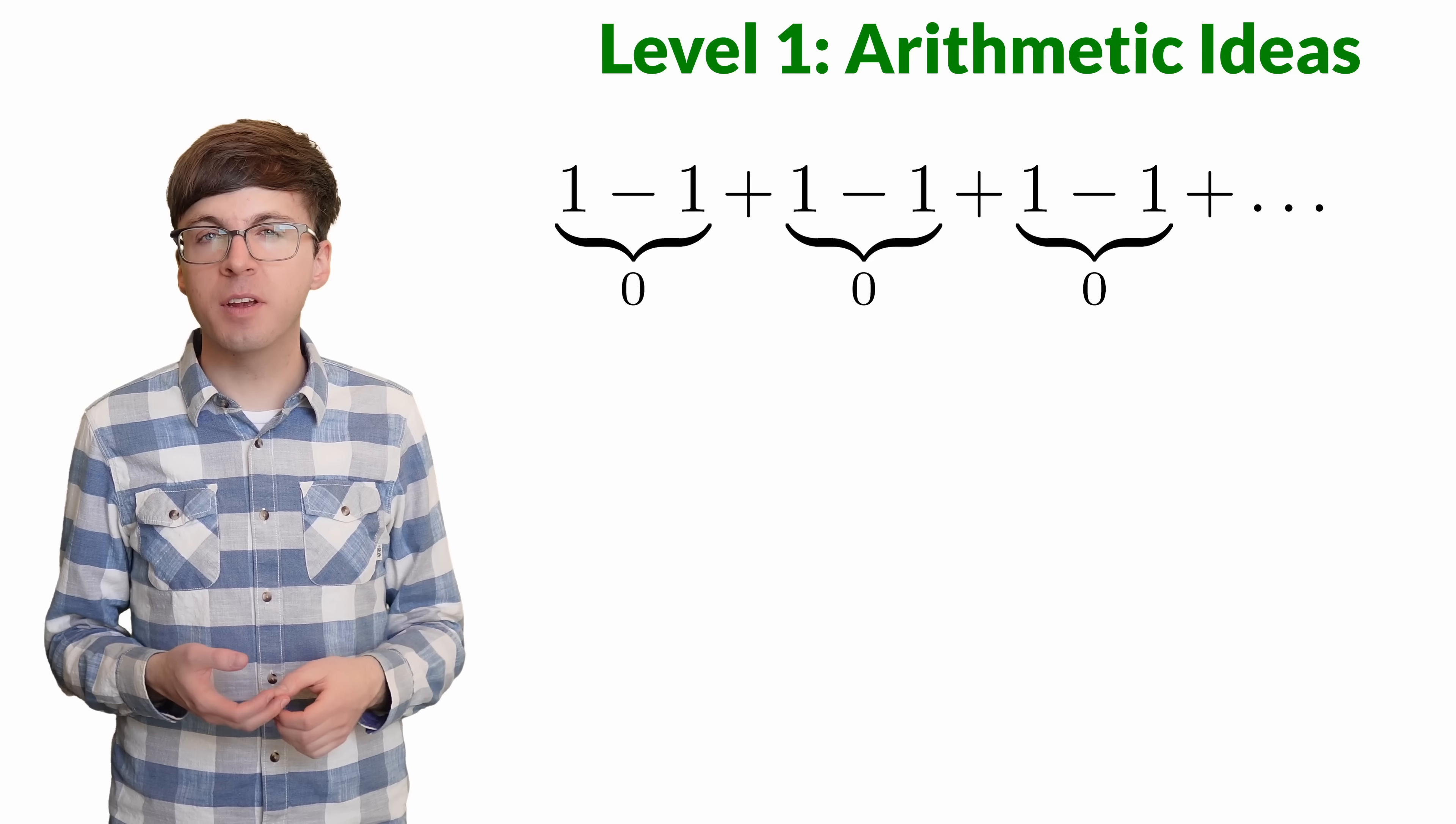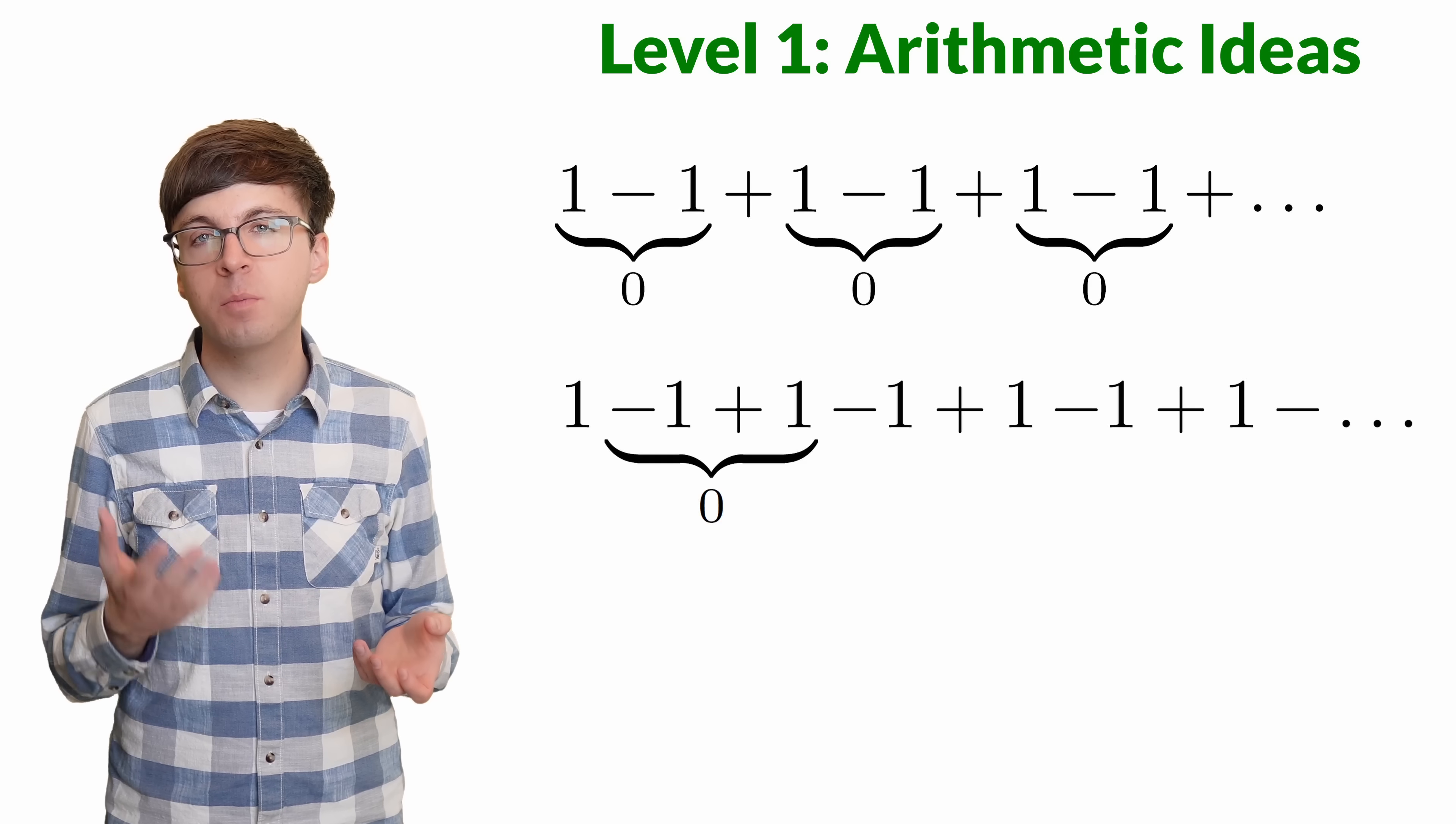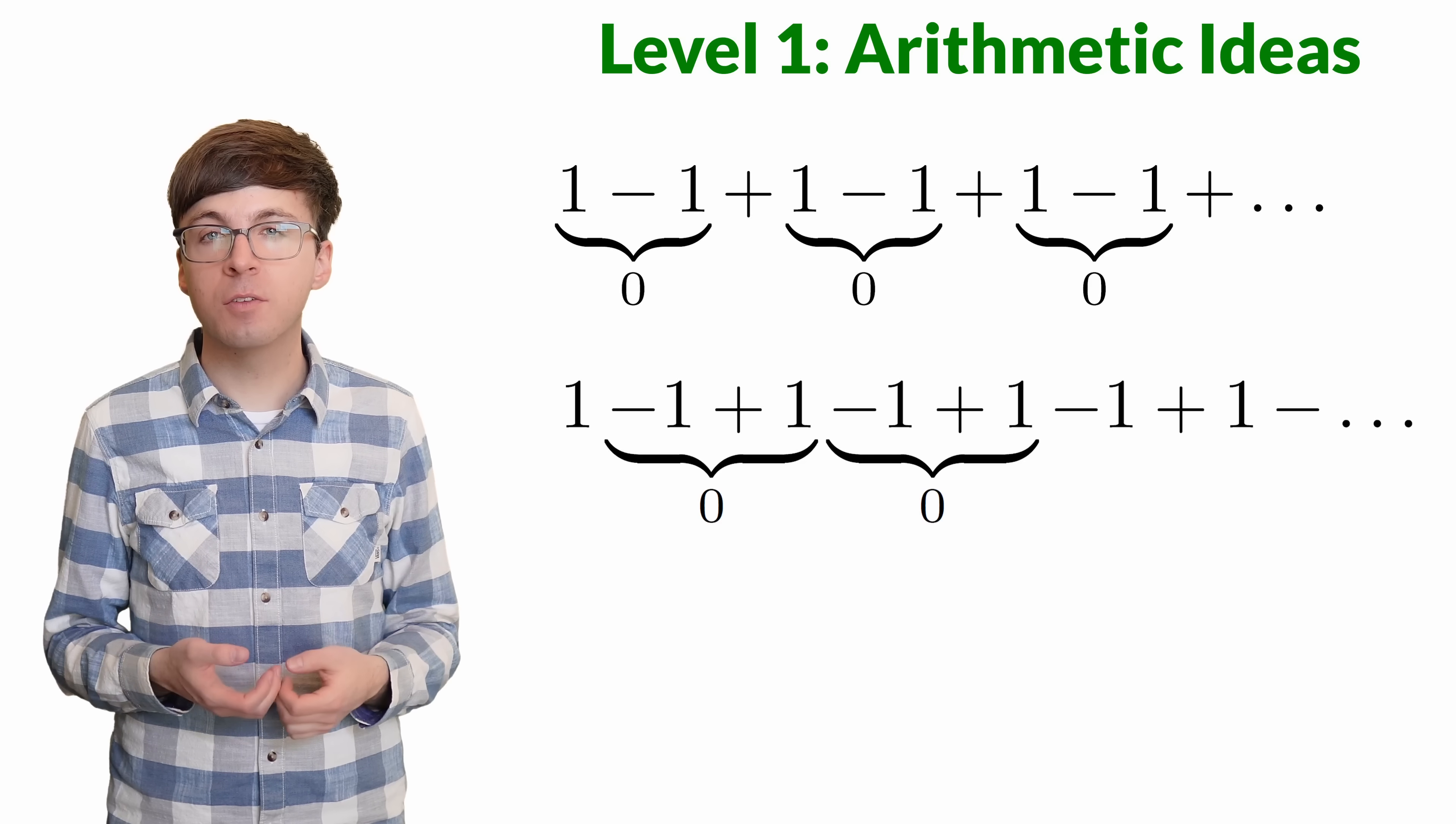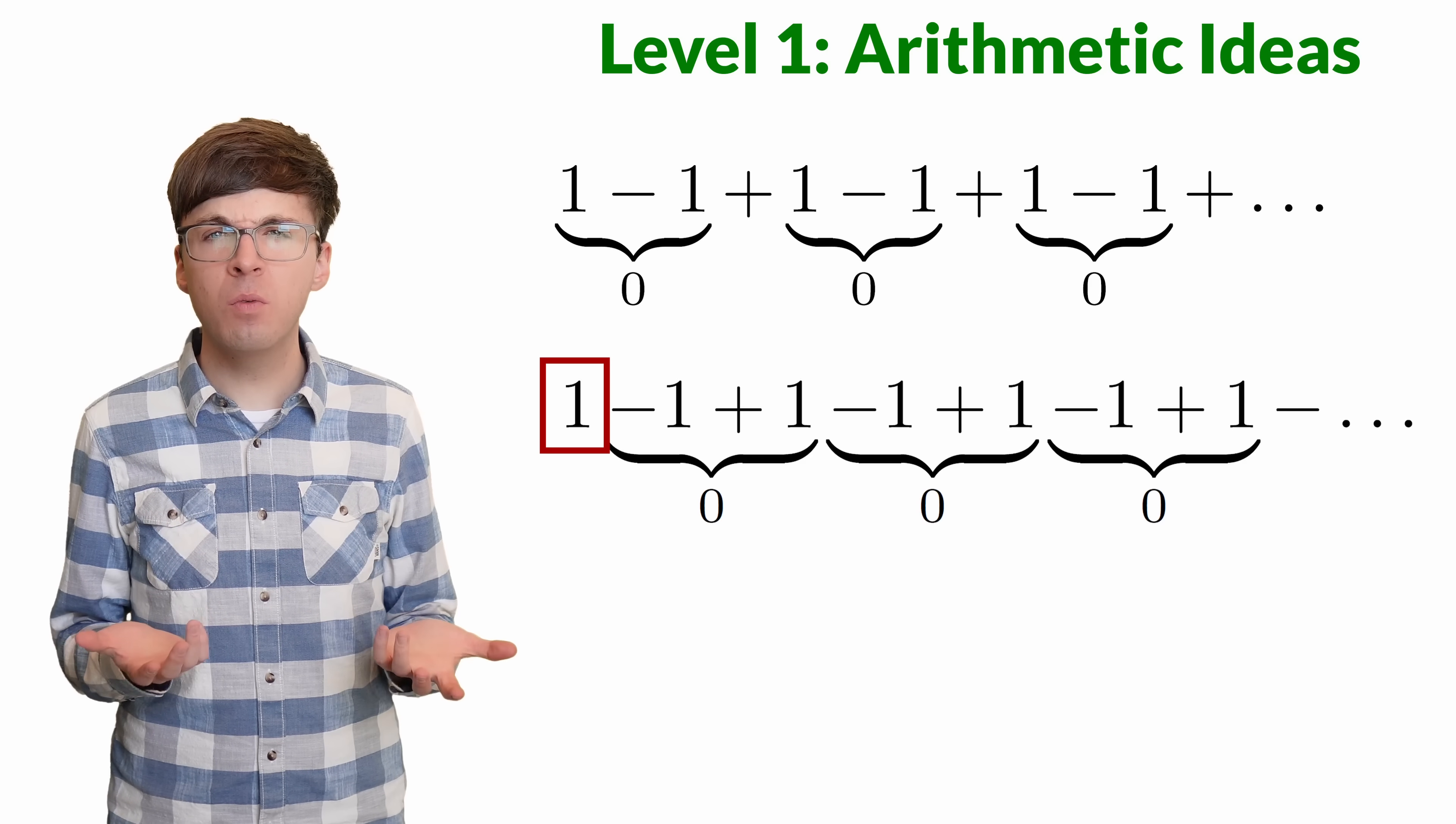But there's a problem here. What if we pair off the values a little differently? Let's cancel the second and the third terms this time. Minus 1 plus 1 equals 0. Then the next two terms should cancel out to 0, and so on. This time we have a 1 left over. So does the sum equal 0 or 1?